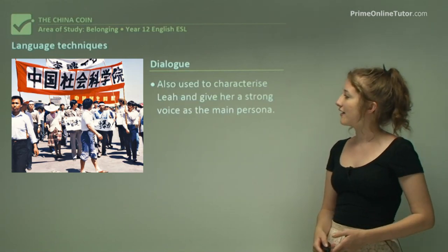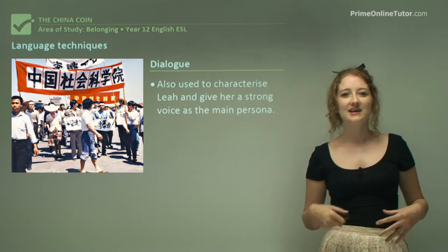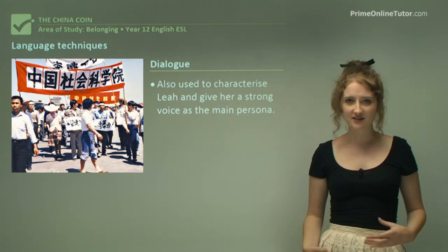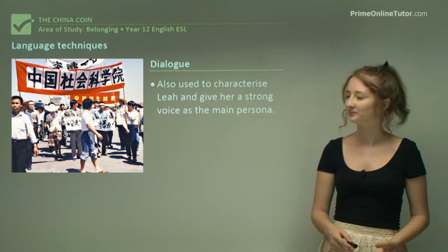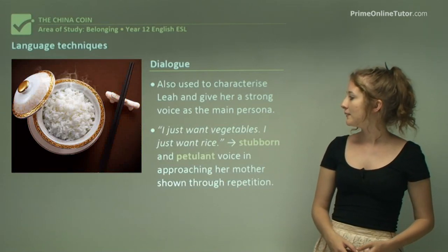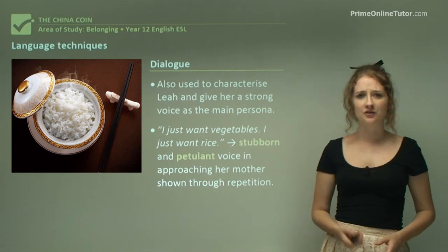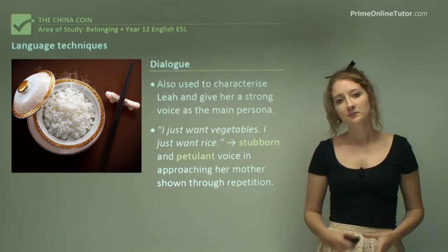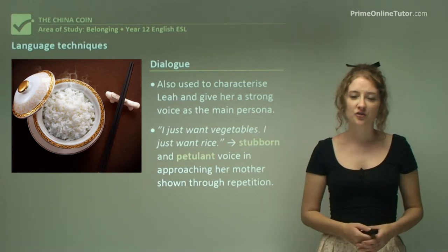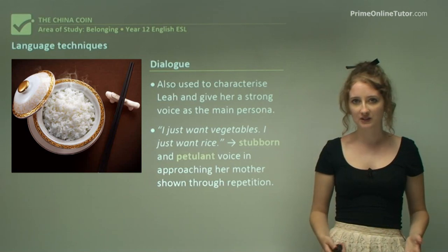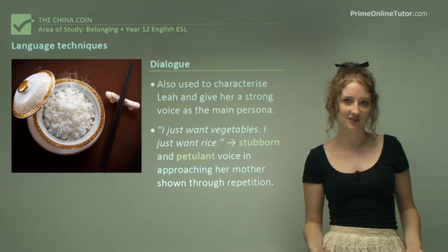Dialogue is also used to characterise Leah and give her a strong voice as the main persona. When you hear Leah's dialogue you can almost characterise her in your mind — it's a really good way of conveying a sense of who the character is. For example: 'I just want vegetables, I just want rice.' You get this very stubborn, petulant voice of Leah approaching her mother, shown through the repetition of 'I want, I want.' The dialogue is very expressive of that relationship in which she's demanding what she wants from her mother.